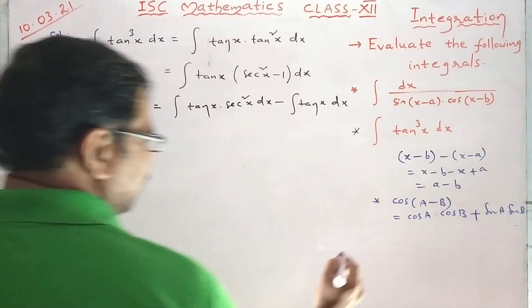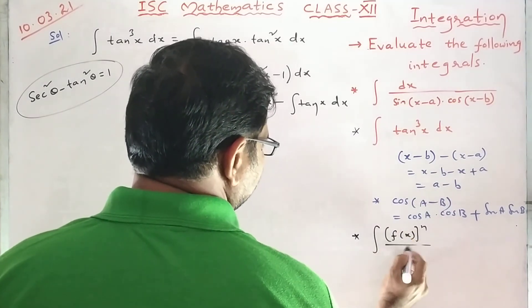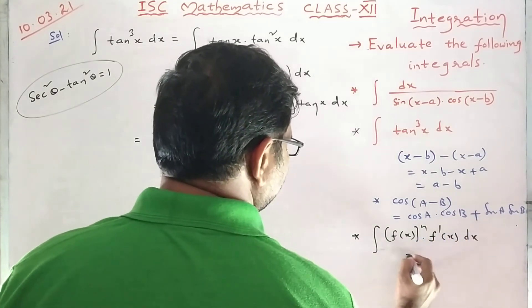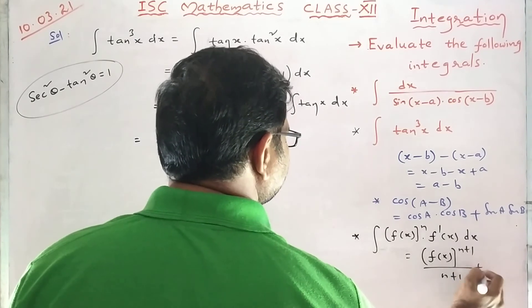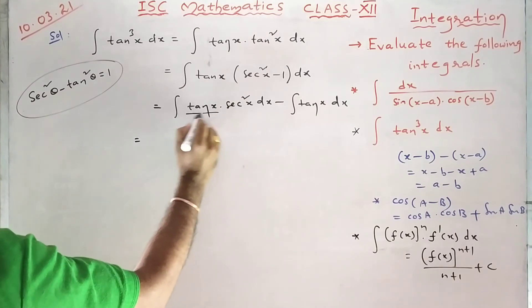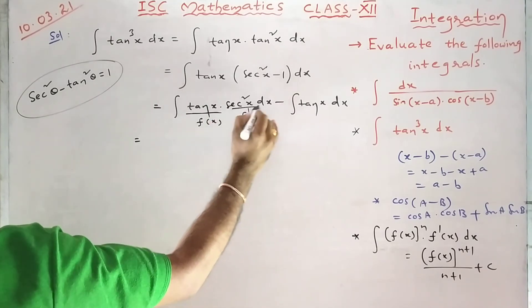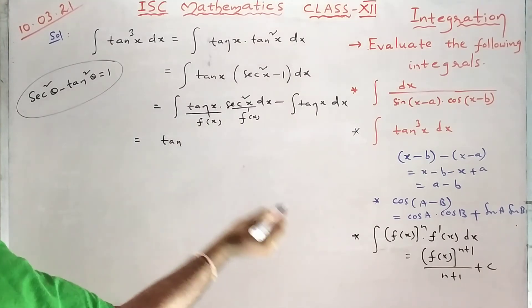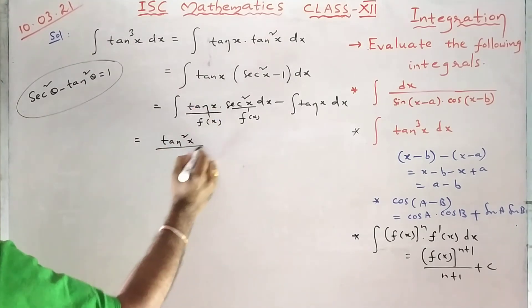Here we have the formula: integral of f(x) to the power n into f'(x) dx equals f(x) to the power n plus 1 upon n plus 1 plus C. So in that form, tan x is taken as f(x) and secant square x is f'(x), since the derivative of tan x is secant square x. So we get tan x to the power n plus 1 upon n plus 1, which means 1 plus 1 gives tan square x by 2.